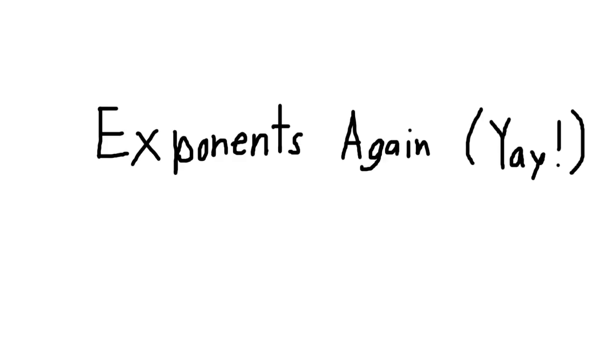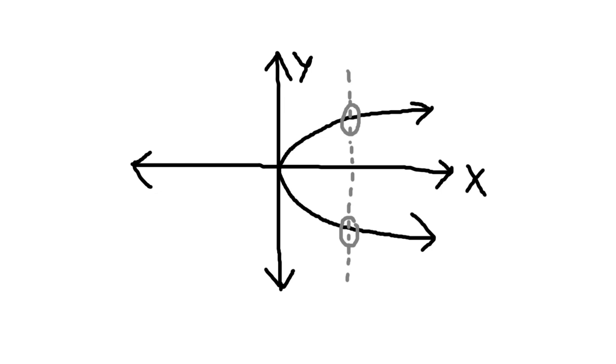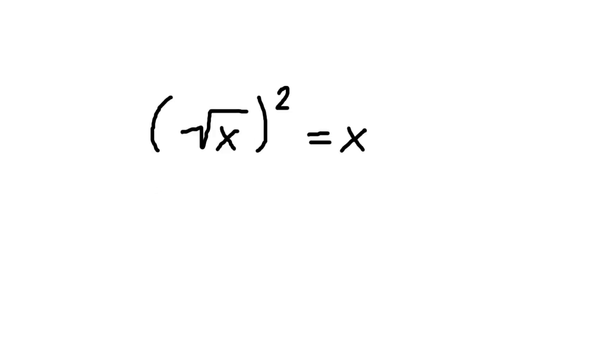This comes full circle back to exponents. Remember how I said that square roots include two results, the positive and negative result? This means that the graph depicting square roots doesn't pass a vertical line test since there exist inputs that give more than one output.